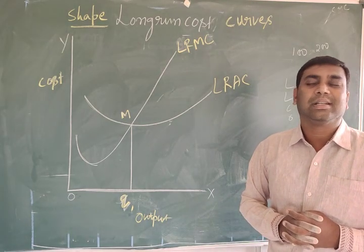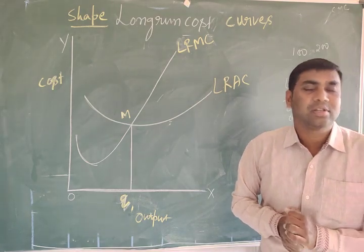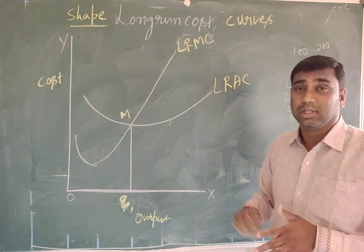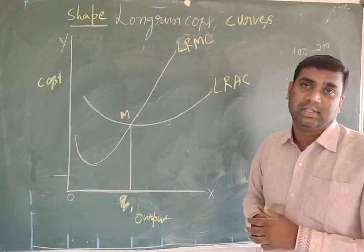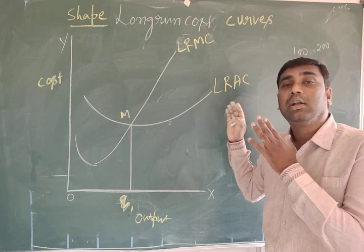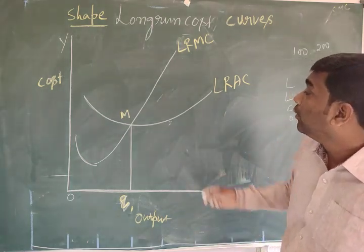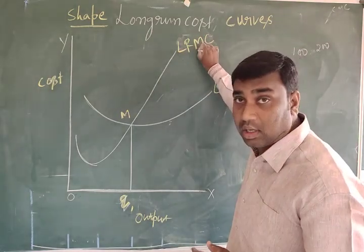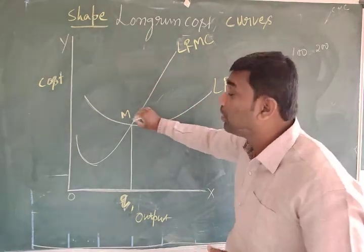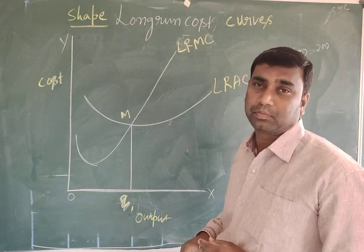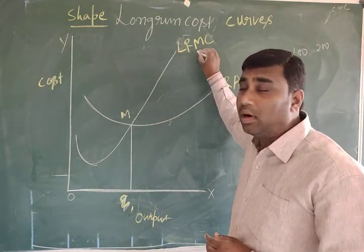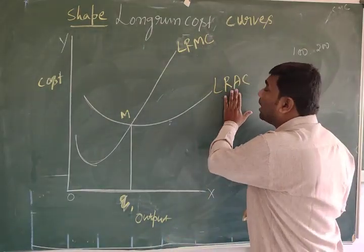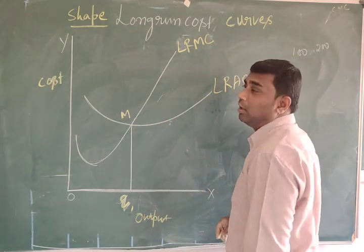Here, average cost must be rising as the firm increases output. You can observe in the table that as the firm's output increases, average cost also increases. If the output is zero, average cost is also zero. The long-run marginal cost curve (LMC) always cuts the long-run average cost curve (LAC) at the point of minimum, from below.